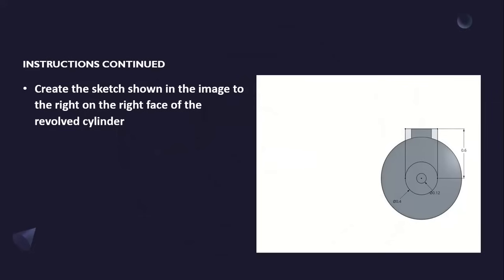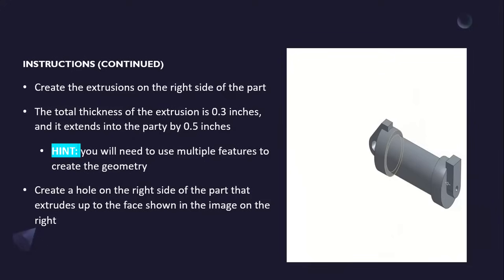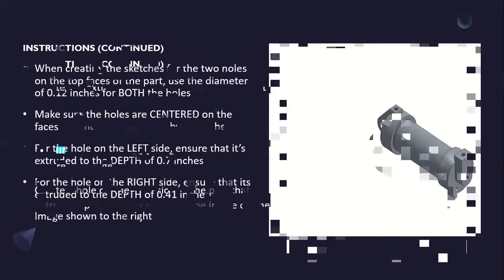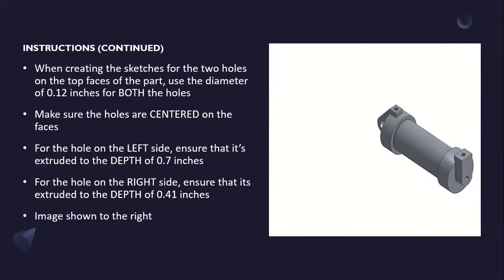Create the sketch shown on the right face of the revolved cylinder. Create the extrusions on the right side of the part — the total thickness of the extrusion is 0.3 inches and it extends into the part by 0.5 inches; you will need to use multiple features to create the geometry. Create a hole in the right side of the part that extrudes up to the face shown. When creating sketches for the two holes on the top faces, use a diameter of 0.12 inches for both holes, make sure the holes are centered on the faces, and for the hole on the left side ensure it is extruded to a depth of 0.7 inches.